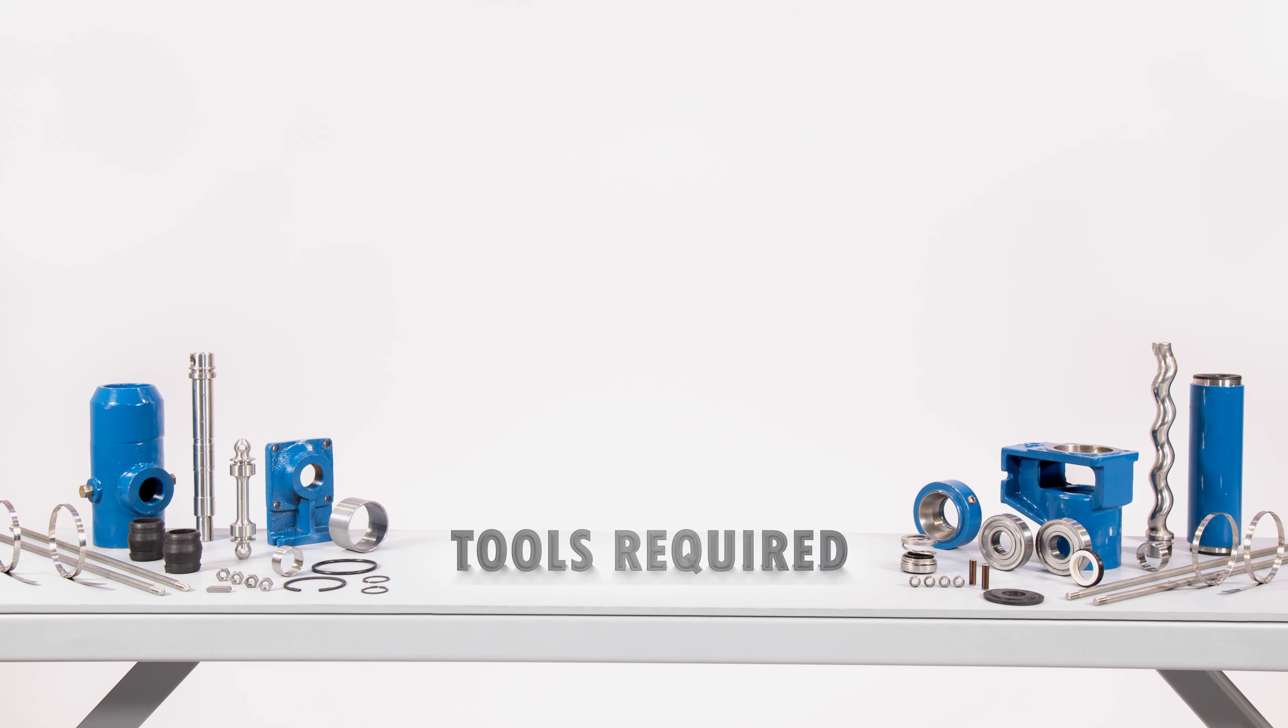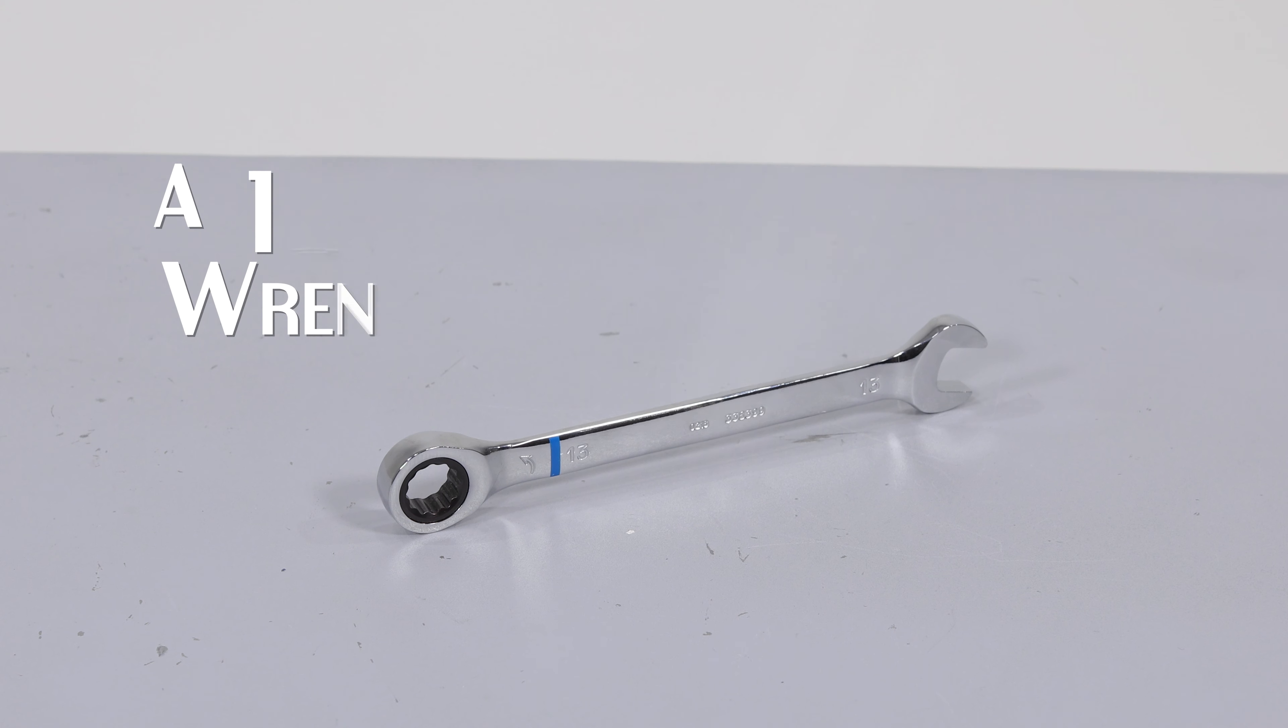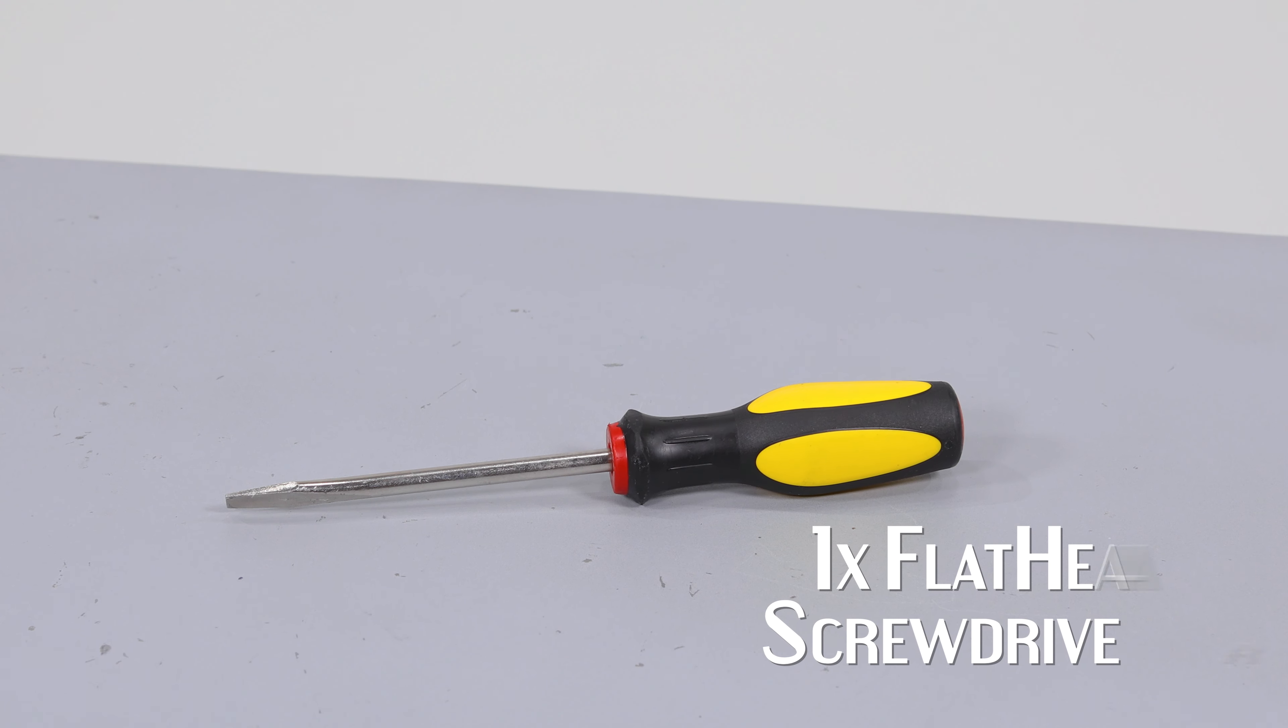Tools required for the disassembly of the ANPL Progressive Cavity Pump: a 13 mm wrench, a small file, punch and hammer, and a flat-bladed screwdriver.